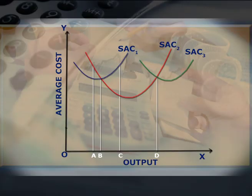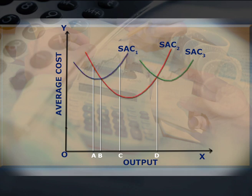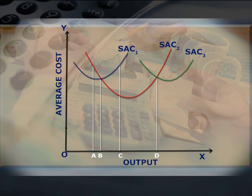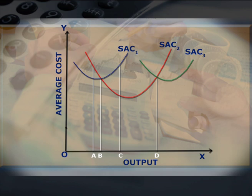To better understand the concept of the long run cost curve, let us take 3 short run cost curves — SAC1, SAC2, and SAC3 — or we can call these plant curves. The firm will try to operate at that level of output where the total cost is minimum. As seen in the diagram, up to OB amount of output the firm will operate on SAC1, though it could also produce with SAC2, because up to OB amount of output, production on SAC1 results in lower cost than on SAC2.